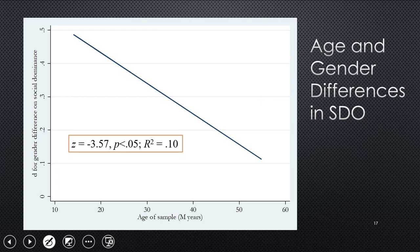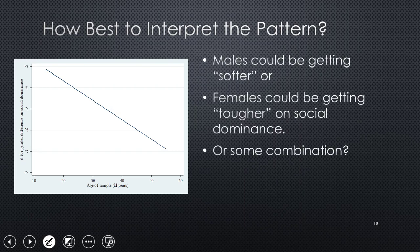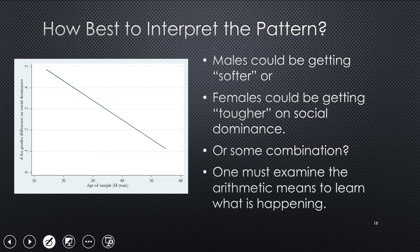And now here's the SMD on the y-axis. And indeed, you see a sharp slope for age of sample resulting in smaller gender differences. So that implies that actually kids have larger gender differences than do adults. And that's intriguing. So how do you interpret this pattern? If you think about people who are aging, is it that men are getting softer and women are getting tougher on social dominance? I would argue you have to examine the arithmetic means to learn what is happening.